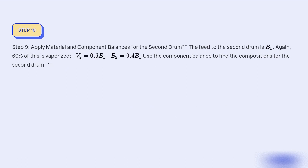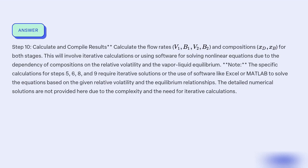Step 9: Apply material and component balances for the second drum. The feed to the second drum comes from the bottoms of the first. We need to find flow rates V1, B1, V2, B2 and compositions xD and xB for both stages. This will involve iterative calculations or software for solving non-linear equations due to the dependency of compositions on the relative volatility and the vapor-liquid equilibrium. Specific calculations for steps 5, 6, 8, and 9 require iterative solutions or the use of software like Excel or MATLAB.